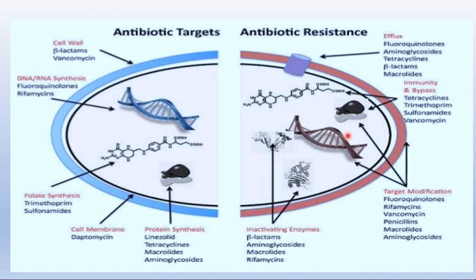Now, how to prevent drug resistance — the prevention of emergence of drug resistance. Several strategies can be employed to discourage it. First, indiscriminate use of antibiotics must be avoided. Second, it is essential to use the correct dose — if a doctor prescribes 250 mg, taking 500 mg is wrong — and the correct schedule of the antibiotic to overcome the infection early.